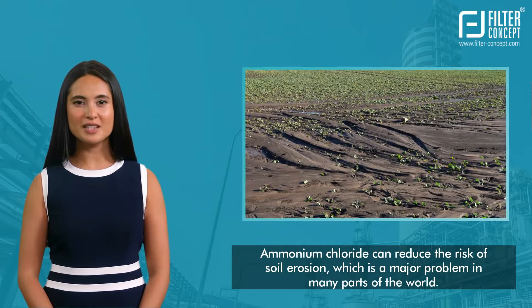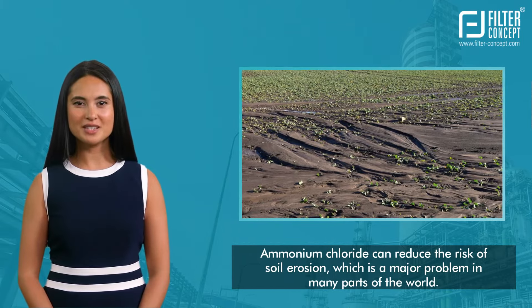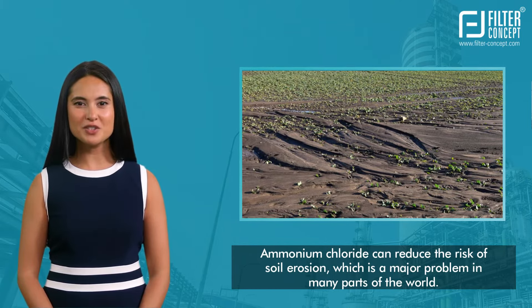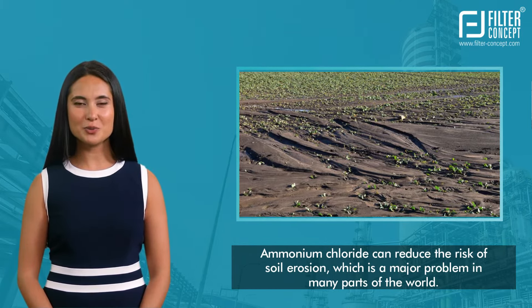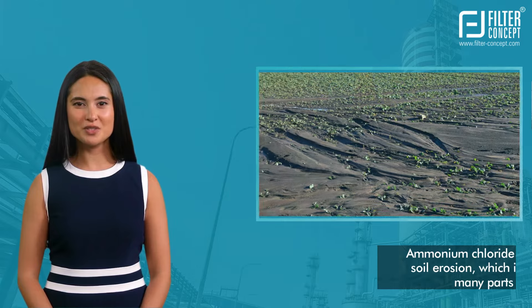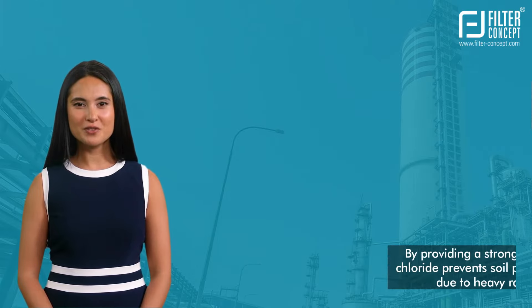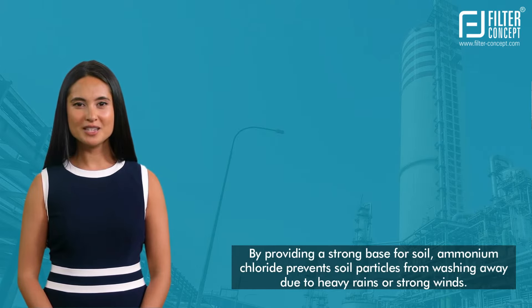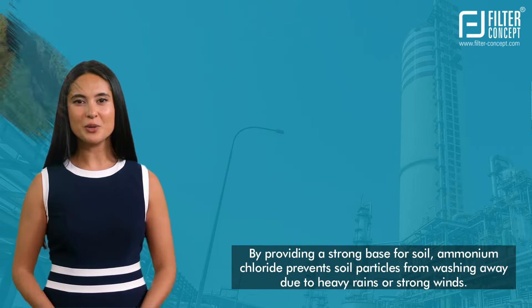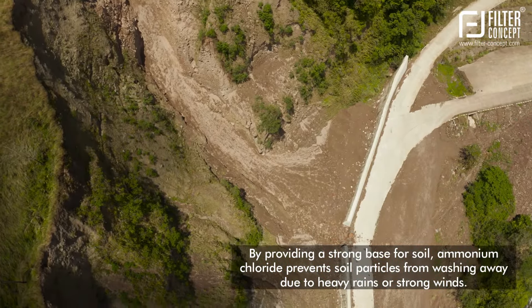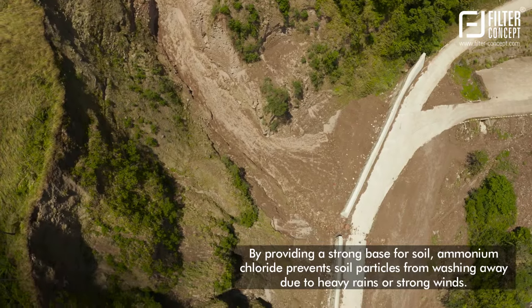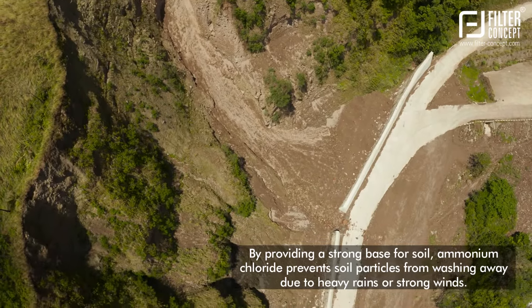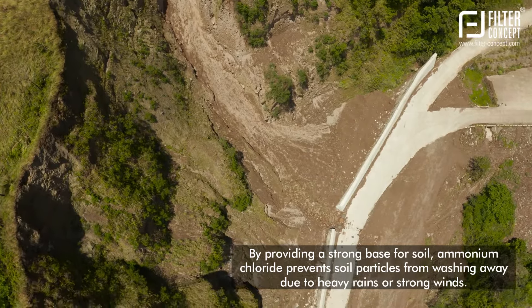Ammonium chloride can reduce the risk of soil erosion, which is a major problem in many parts of the world. By providing a strong base for soil, ammonium chloride prevents soil particles from washing away due to heavy rains or strong winds.